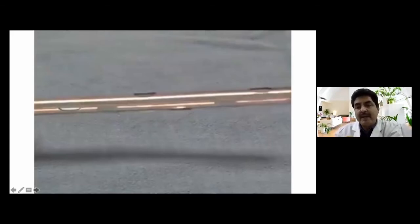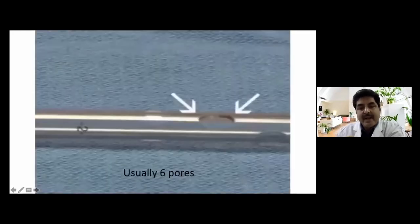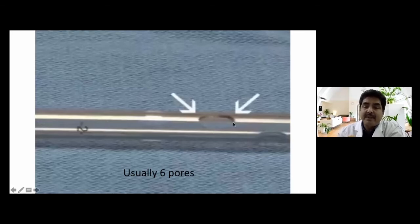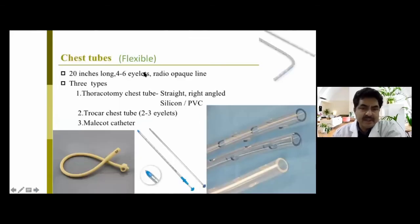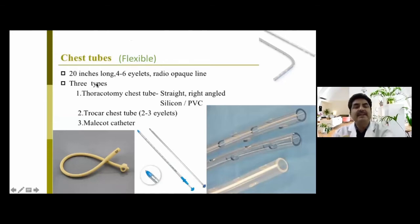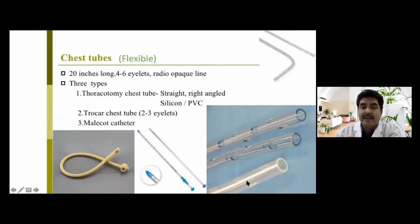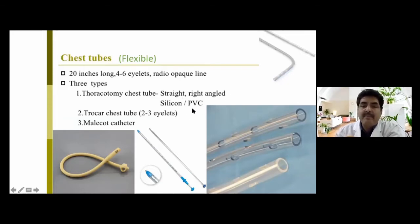The chest drain tube usually has six side ports, with one at the front as well. The tube is flexible, about 20 inches long, with four to six eyelets and a radiopaque line. Three types are available: thoracotomy chest tube — straight or right-angle — and a trocar chest tube. Tubes are made of either polyvinyl chloride or silicone; silicone is more costly.